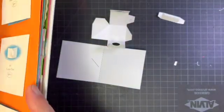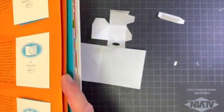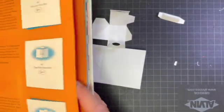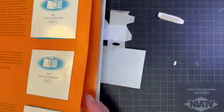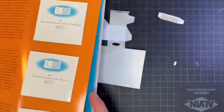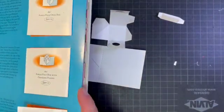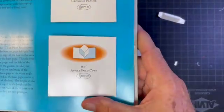And where is it? Angle fold, angle fold. Where's the angle folds? There they are, angle fold cube. This is the angle fold cube.